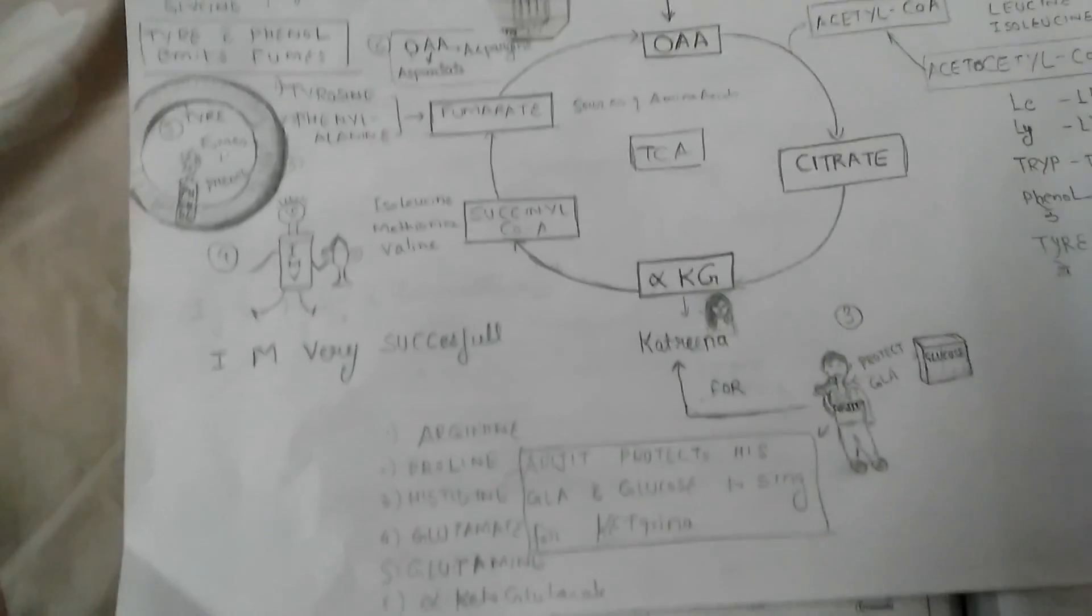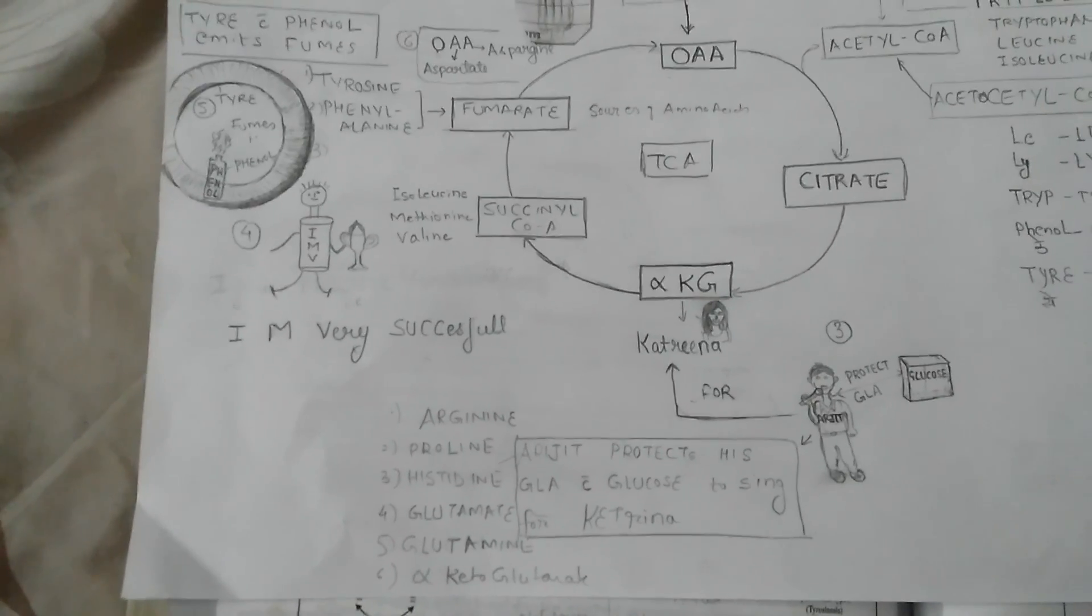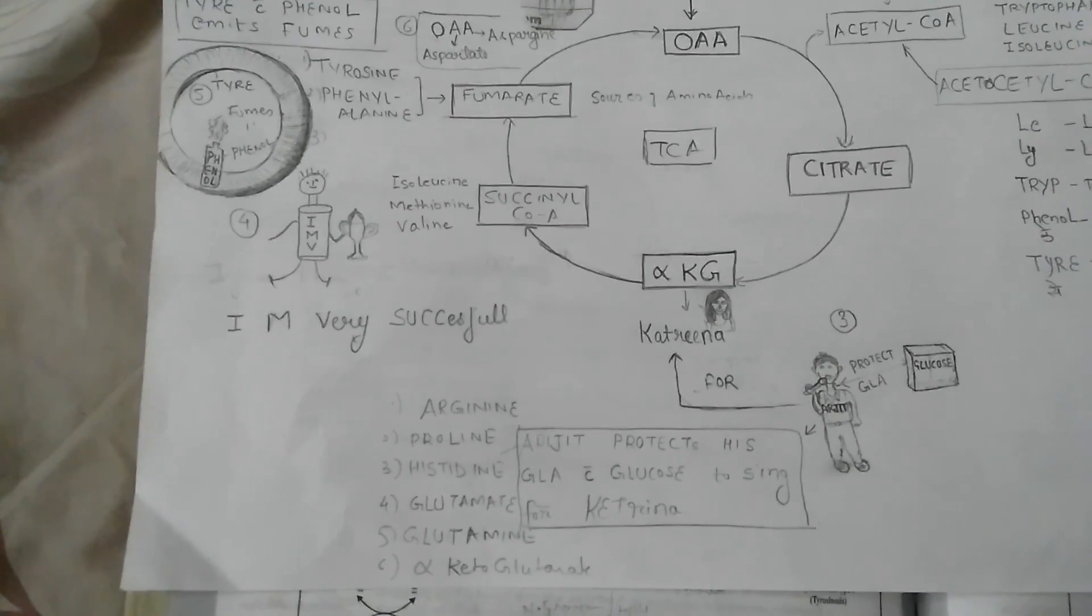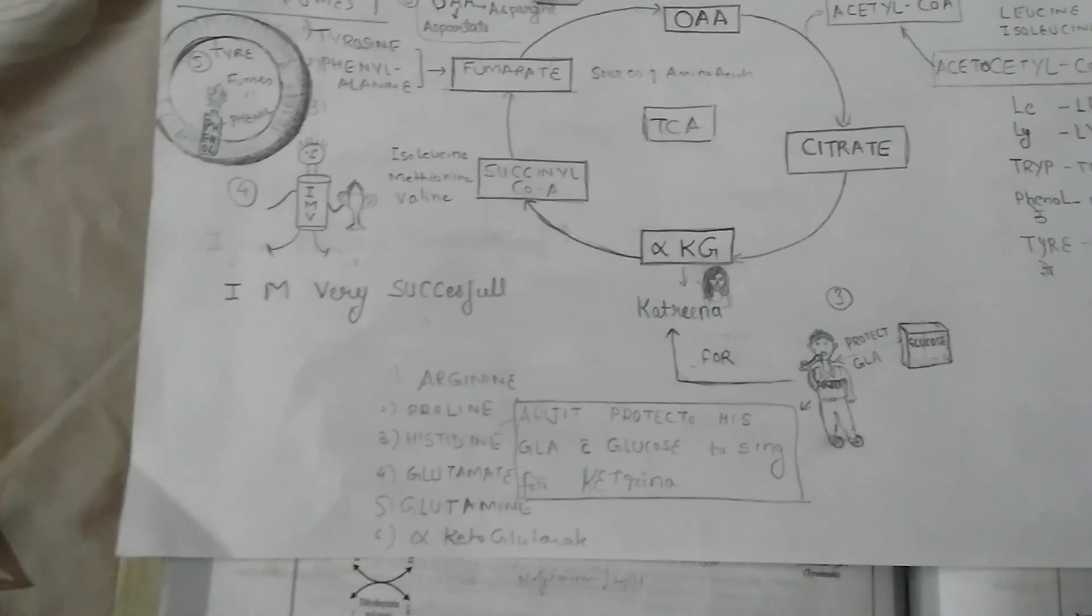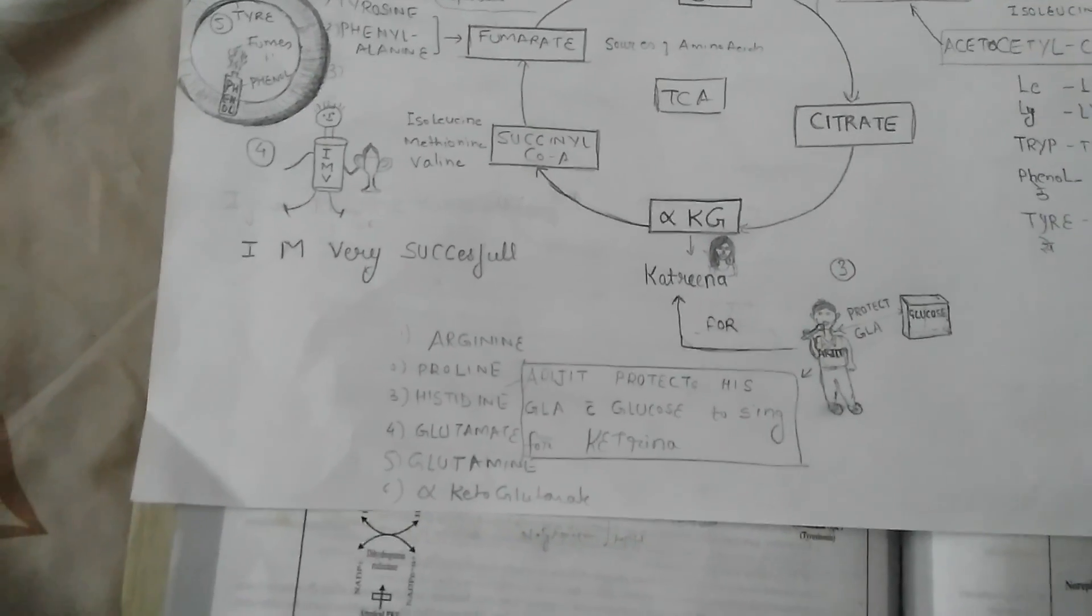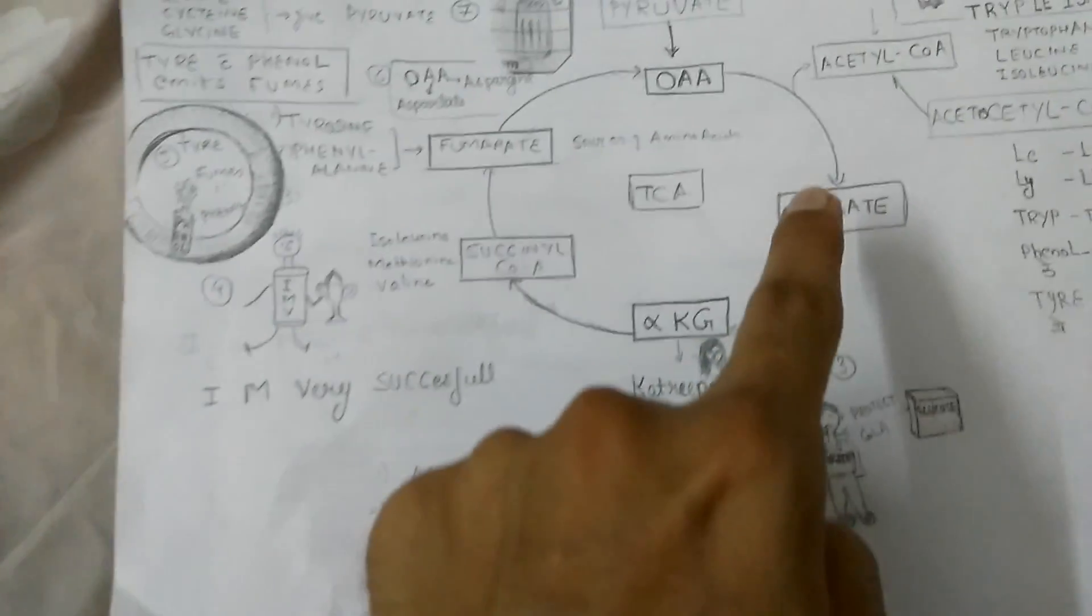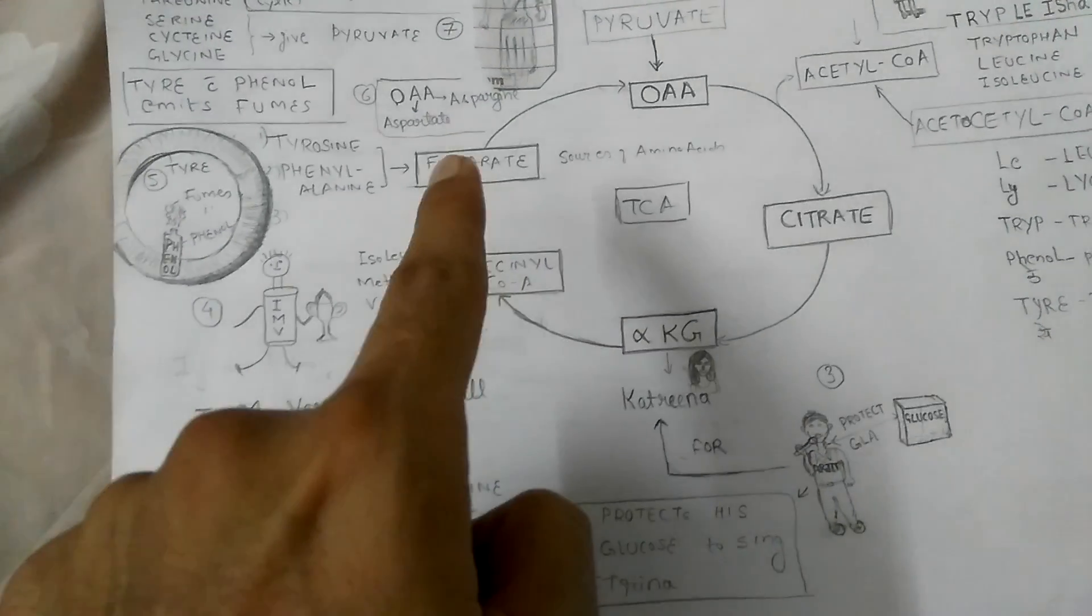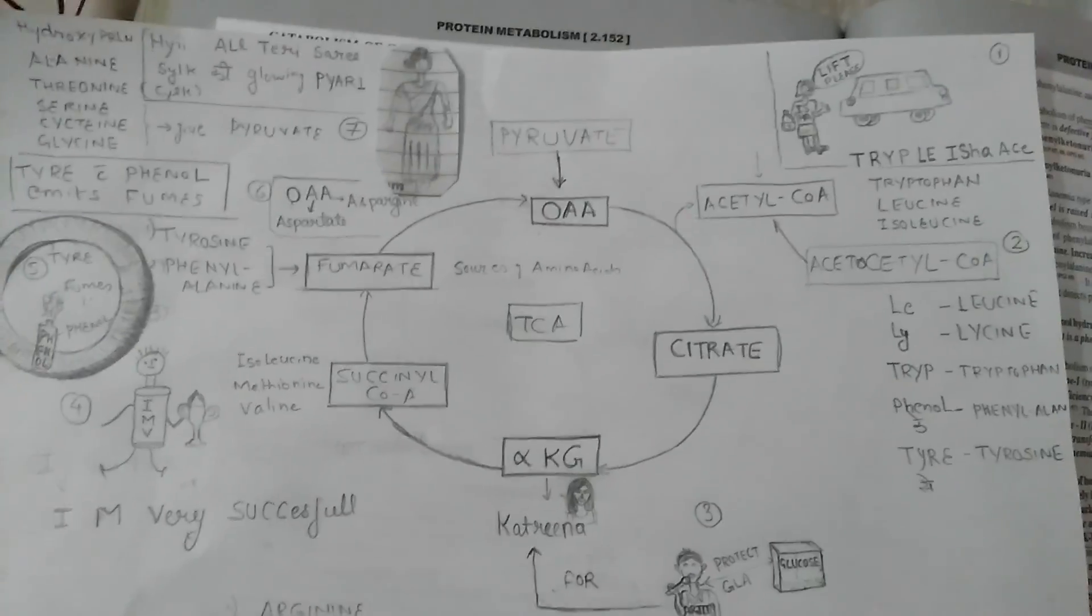Hi friends, this is a video related to biochemistry in which I am describing the Krebs cycle, or TCA cycle, and substances like oxaloacetic acid, citrate, and alpha-ketoglutarate. I will explain all the sources to make it interesting with visuals.